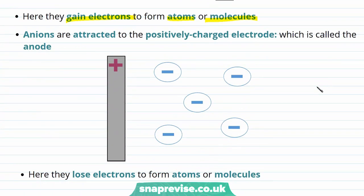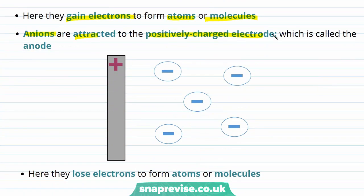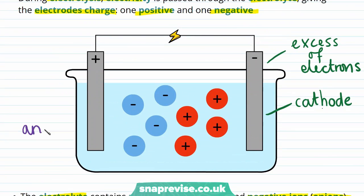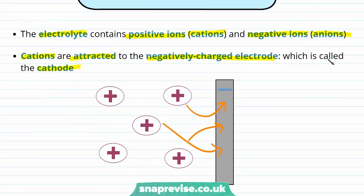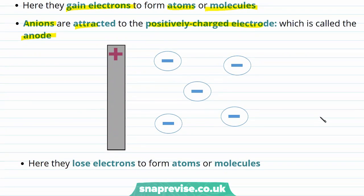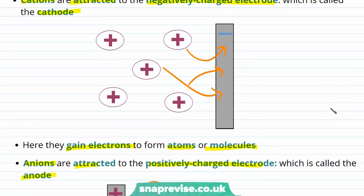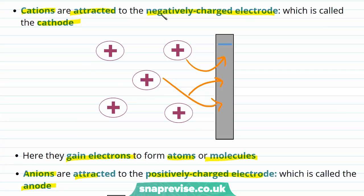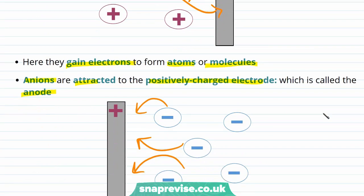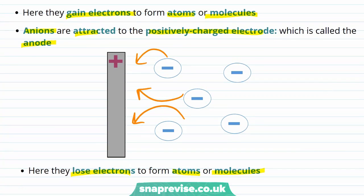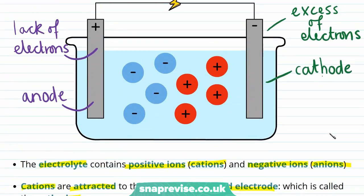Similarly, the negative ions within the electrolyte will be attracted to the positively charged electrode. We call the electrode that negatively charged anions are attracted to the anode. The anode will have a positive charge due to a lack of electrons. The negatively charged ions that are attracted towards the anode will give up electrons in order to form atoms or molecules. Therefore, at the cathode, positively charged cations will gain electrons, and at the anode, negatively charged anions will lose electrons. There is an overall flow of electrons and current travels through the circuit made up of electrolyte and electrodes.